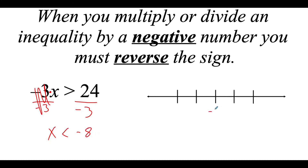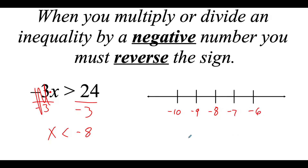I put negative 8 in the middle of the number line. Moving left means more negative, moving right means less negative. We've got just a less than with no equals, so it's an open circle at negative 8, and then we shade our arrow heading to the left for all numbers smaller than negative 8.